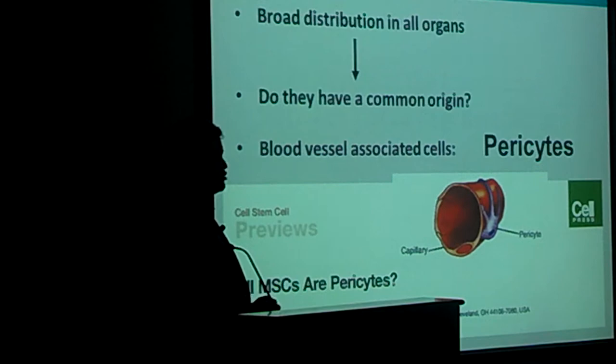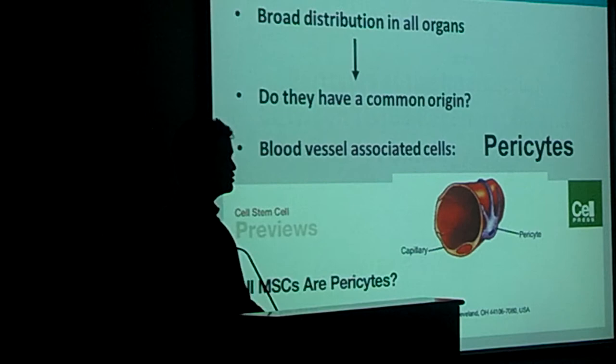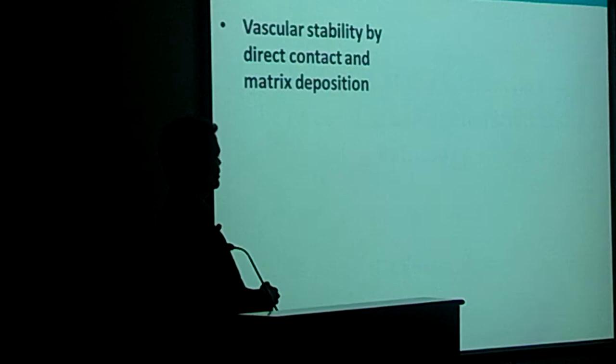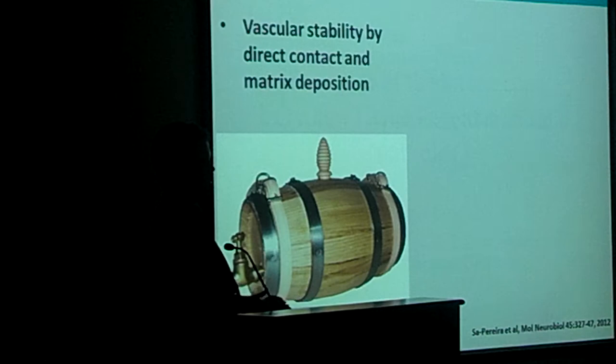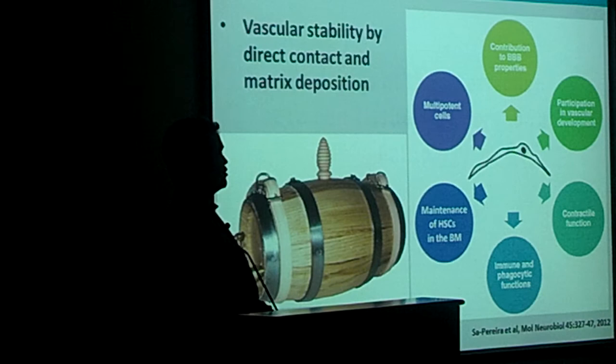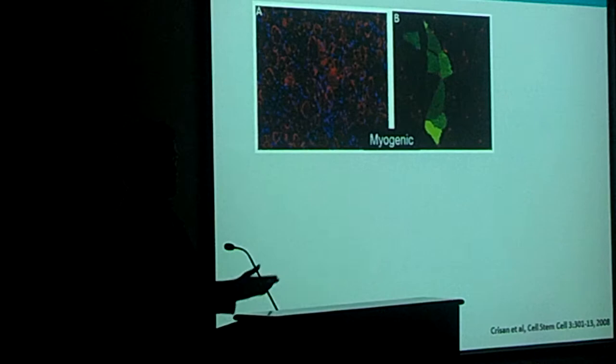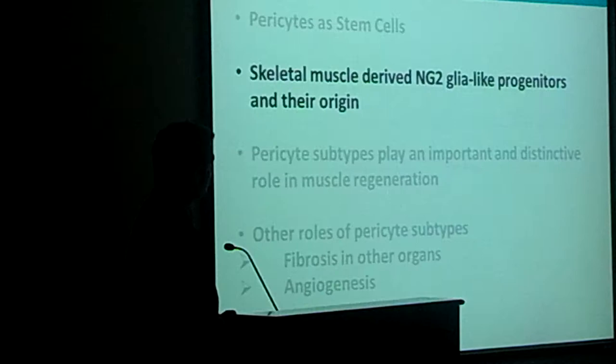Pericytes are characterized by their anatomical location — they are in very close proximity to blood vessel endothelial cells. Their main function is related with vascular stability. By analogy with this image, the pericytes stabilize the vessels. They have multiple other functions, but here we will focus specifically on their function as multipotent stem cells. Pericytes can form muscle, cartilage, adipose tissue, and bone.